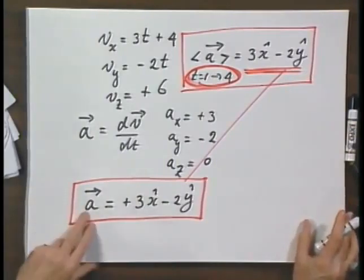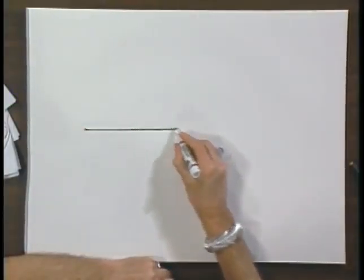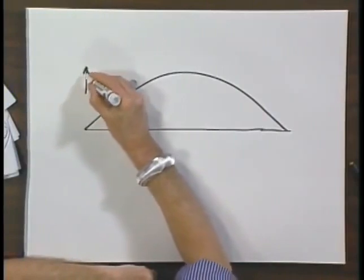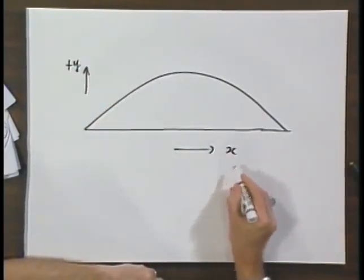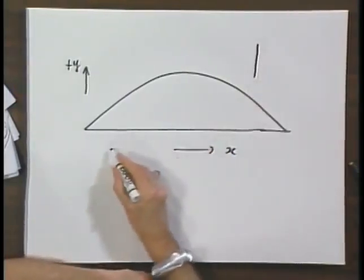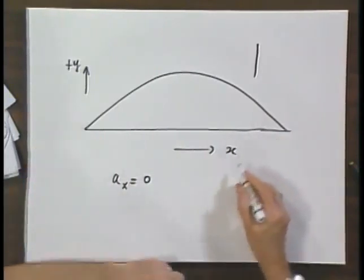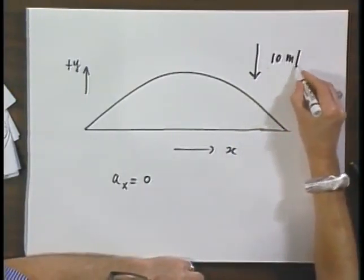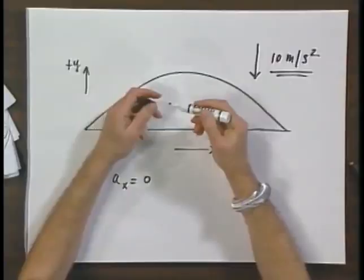We will often encounter situations in Newtonian mechanics whereby we have a constant acceleration. Whenever we deal with trajectories, we throw up rockets, and we ignore air drag, we get a nice parabola. And if we call this the plus y direction, and this is called the x direction, which is quite common, we will have no acceleration in the x direction, unless there is air drag. And there will be an acceleration in the minus y direction, which is 10 meters per second squared. So we will often deal in this course with situations whereby we do have a constant acceleration.